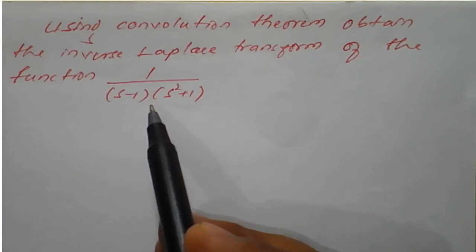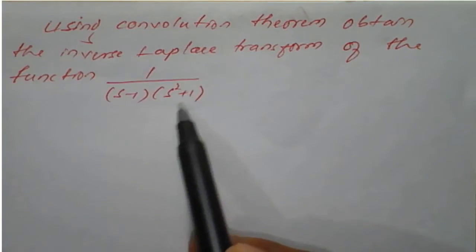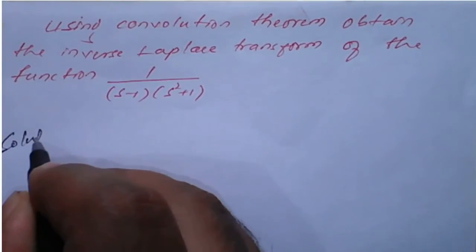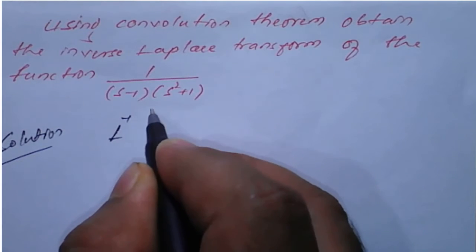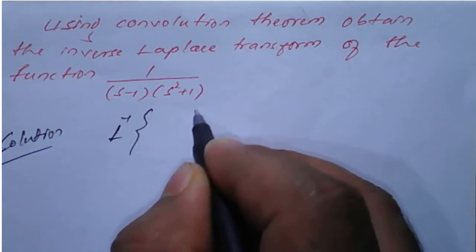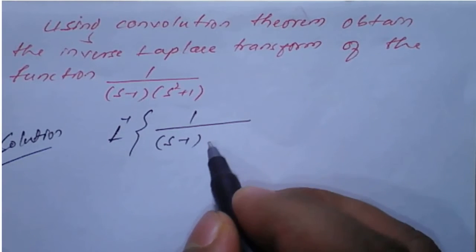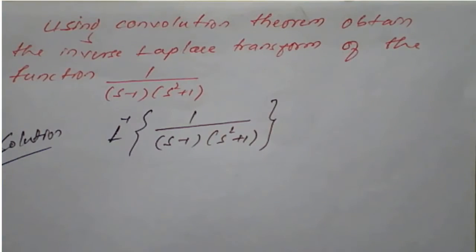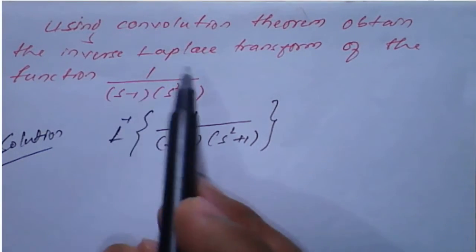The same question you can solve by using partial fractions also, but when they state 'using convolution theorem,' we need to apply the convolution theorem only. So we need to find the inverse Laplace transform of 1 upon (s minus 1)(s squared plus 1) using convolution theorem.